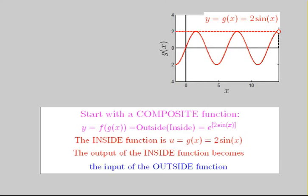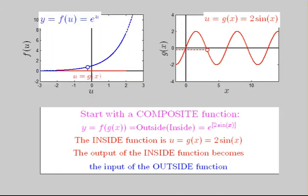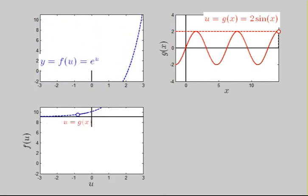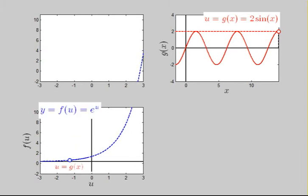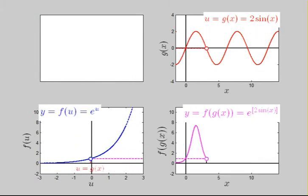The outside function is e to the u. As is the case for all composite functions, the output of the inside function becomes the input of the outside function. We're going to place the exponential curve at the bottom, so you can see how the composite function is generated from two separate function evaluations to produce the pink curve as a function of x.